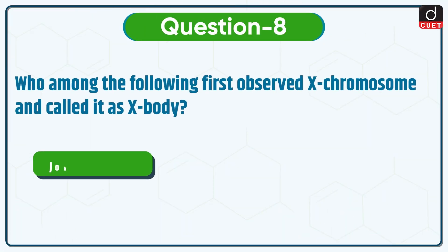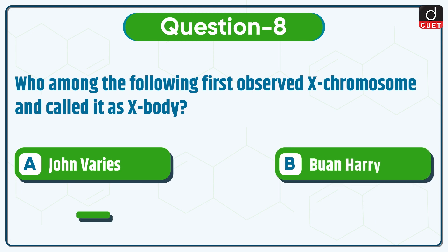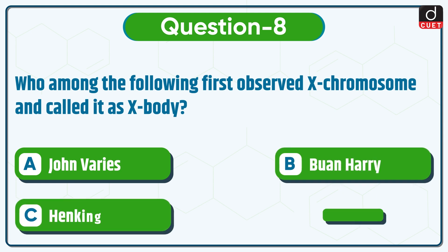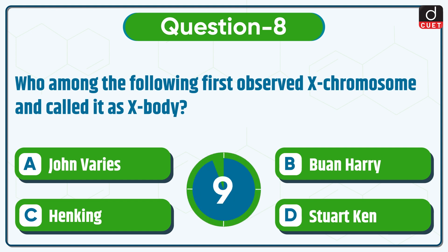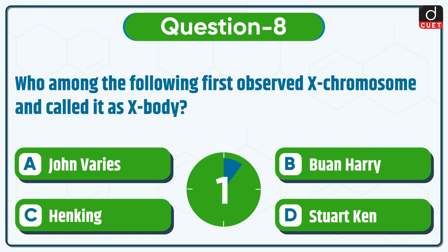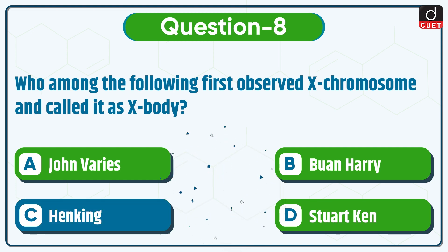Next question is: who among the following first observed the X chromosome and called it the X body? Joan, Boveri, Henry, Henking, or Stuart Cain? The correct answer is option C, Henking.